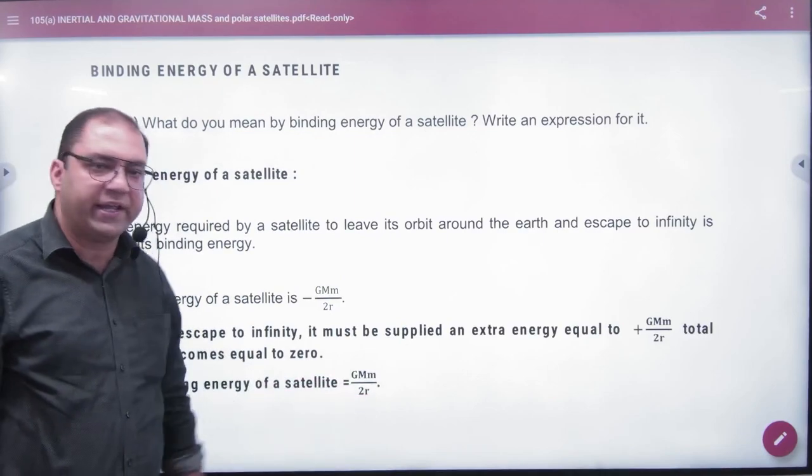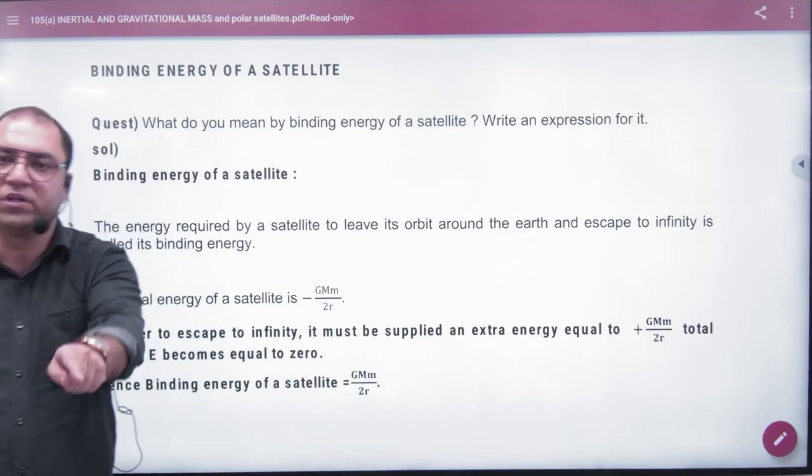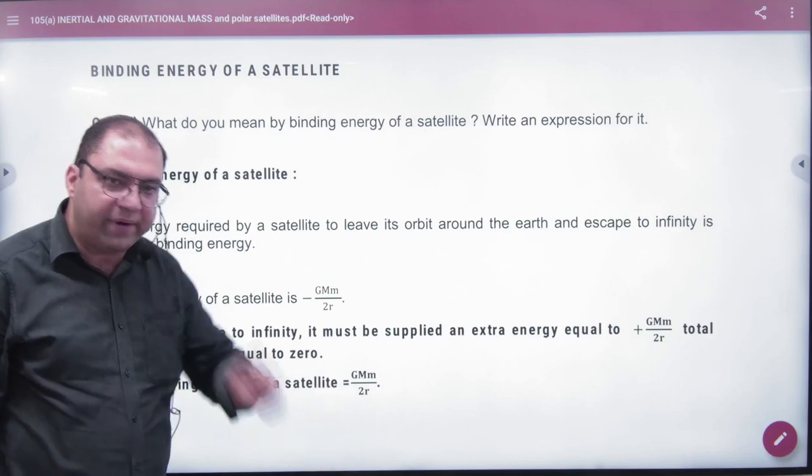This is the formula for binding energy. Note the formula in the register. Expression for binding energy: GMm by 2R.